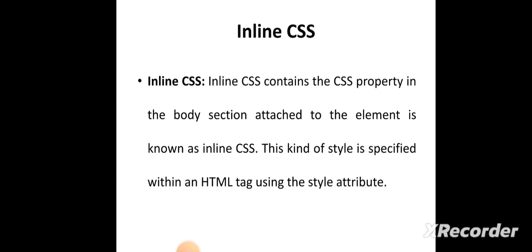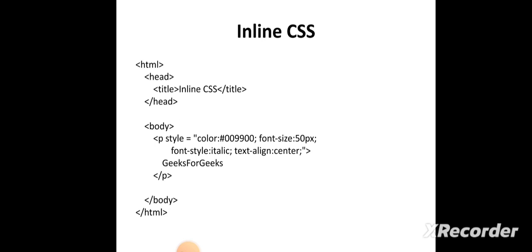First we see about inline style sheet. The inline style sheet is used separately in individual tags in an HTML document. For example, in this program the paragraph style is denoted here. The individual paragraph is written as: paragraph style, style equal to color (color value), font size, font style, and text alignment represented here — the paragraph is displayed in this style format.